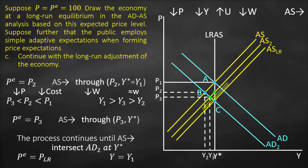Eventually we reach our long-run aggregate supply shift, giving us the price in the long run, which is lower than P3, lower than P2, lower than P1. And we reach our full employment output, or potential output, Y* or Y1.